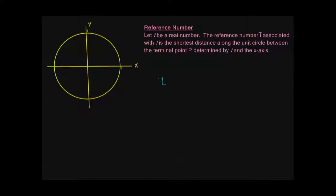For an easy example first, let's say t equals π/4. Starting from the initial position, I'm going to move one-eighth of the way around the circle, or a quarter of the way around the top of the circle — that puts me right here. Here's my point p, this is t equals π/4. Now t-bar is going to be the shortest distance between p, my terminal point determined by t, and the x-axis.